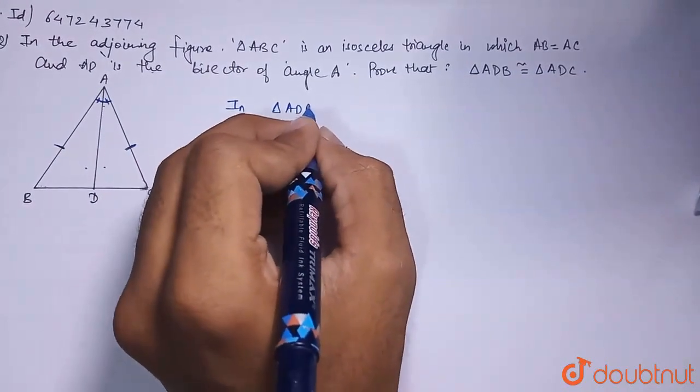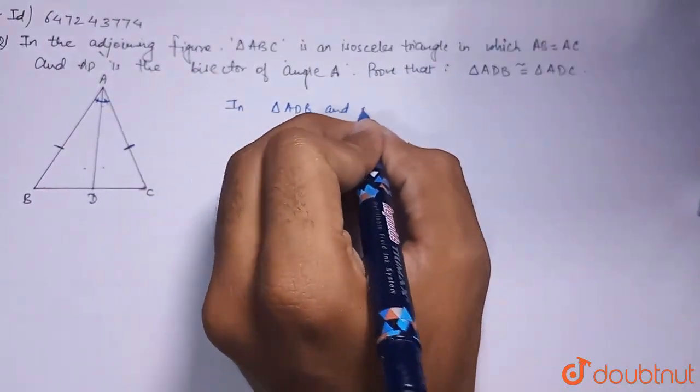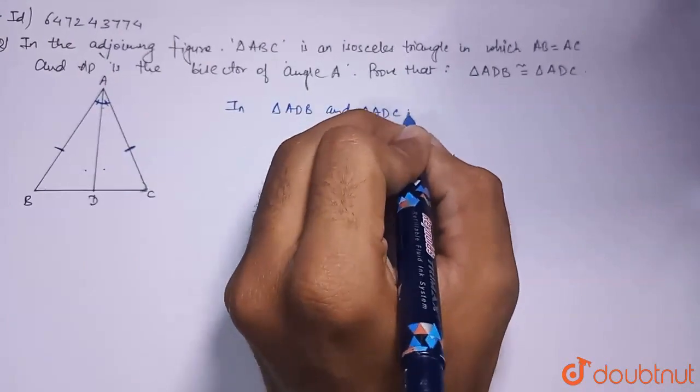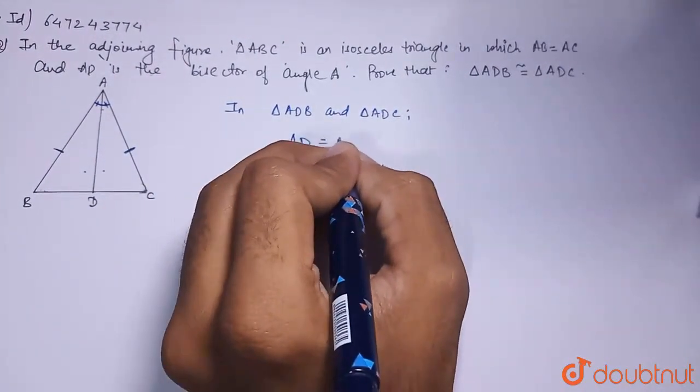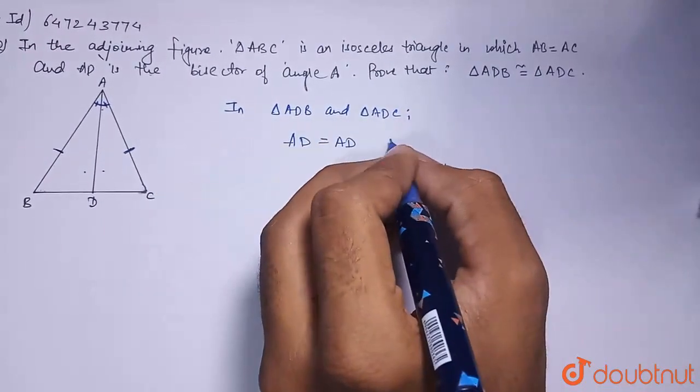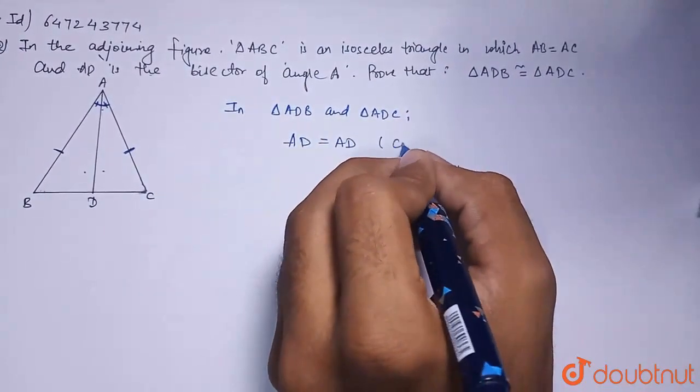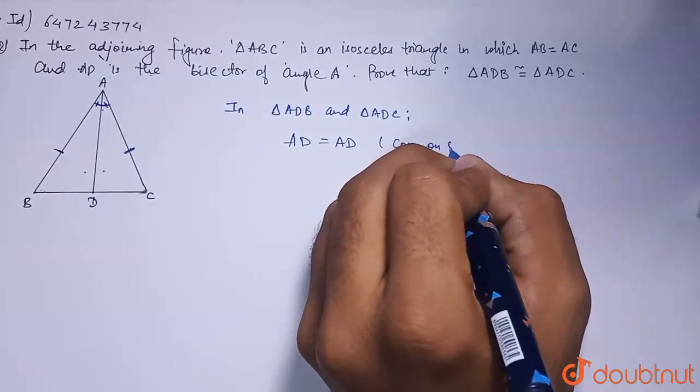In triangle ADB and triangle ADC: First, AD equals AD. This is because it is a common side. So obviously, it will be equal.